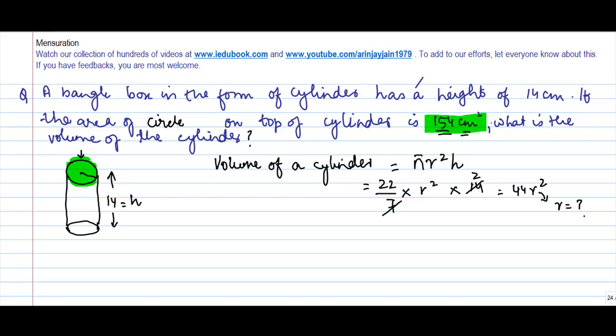Area of a circle is πr², which is 22/7 × r² = 154. So r² is equal to 154 × 7 divided by 22.